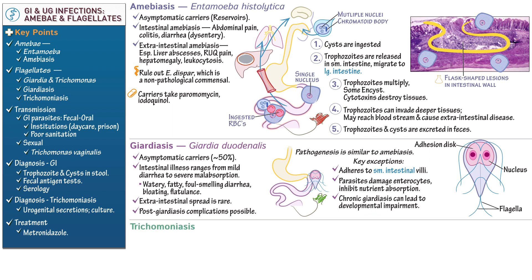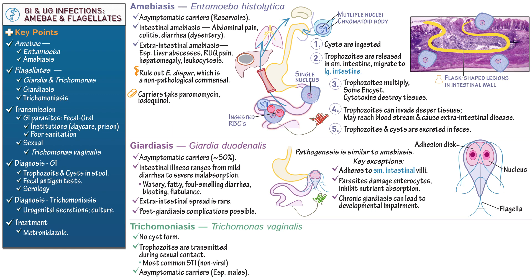Finally, write that Trichomoniasis is caused by Trichomonas vaginalis. This protozoan has no cyst form; thus, its trophozoites, which cannot survive outside the host, are transmitted during sexual contact via urogenital secretions. Write that Trichomoniasis is the most common non-viral sexually transmitted infection in the United States. However, most infected individuals, especially males, are asymptomatic carriers. When symptomatic, Trichomoniasis produces vaginitis or urethritis and sometimes prostatitis. Vaginitis and urethritis are characterized by a burning, itchy sensation and may be accompanied by a foul-smelling or frothy discharge.